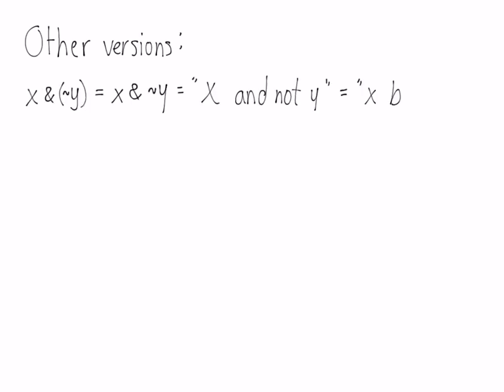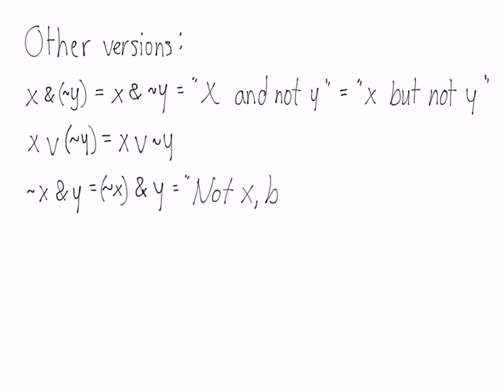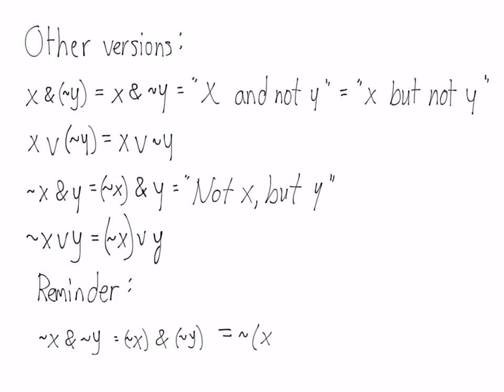Here are some other versions of similar patterns. Notice how you can drop the brackets on the negation because it's clear where it will be. This sentence can be translated as x and not y, for which we often say 'x but not y.' Then we have the similar 'x or not y,' and then 'not x but y.' Again, in each of these cases you can drop the brackets because it's not ambiguous. And as a reminder, the conjunction of negations becomes the negation of a disjunction.